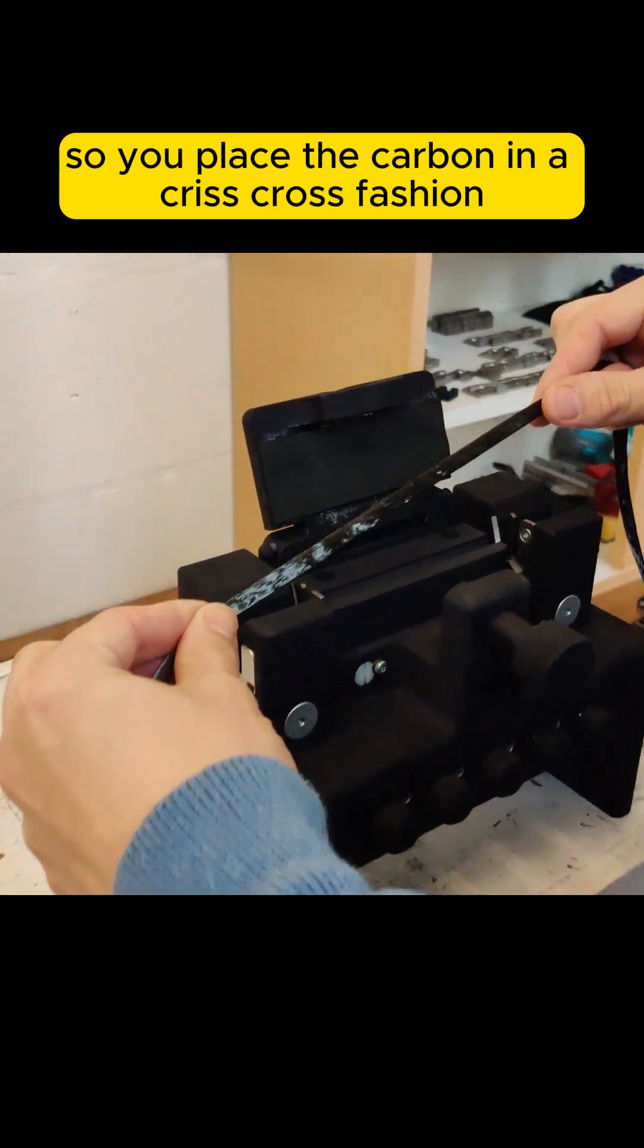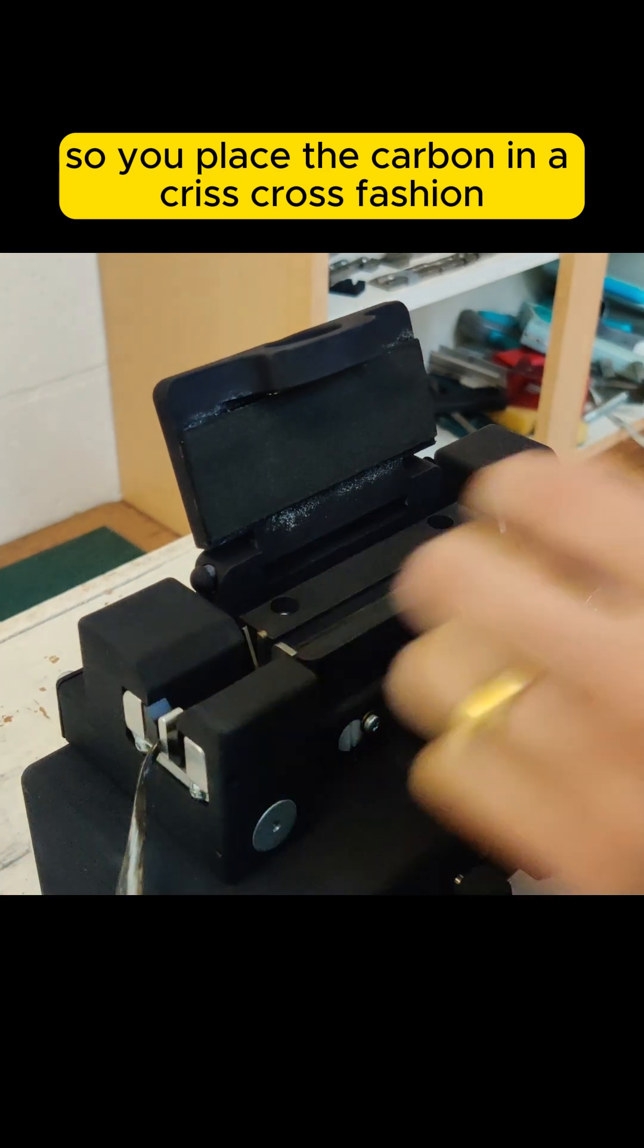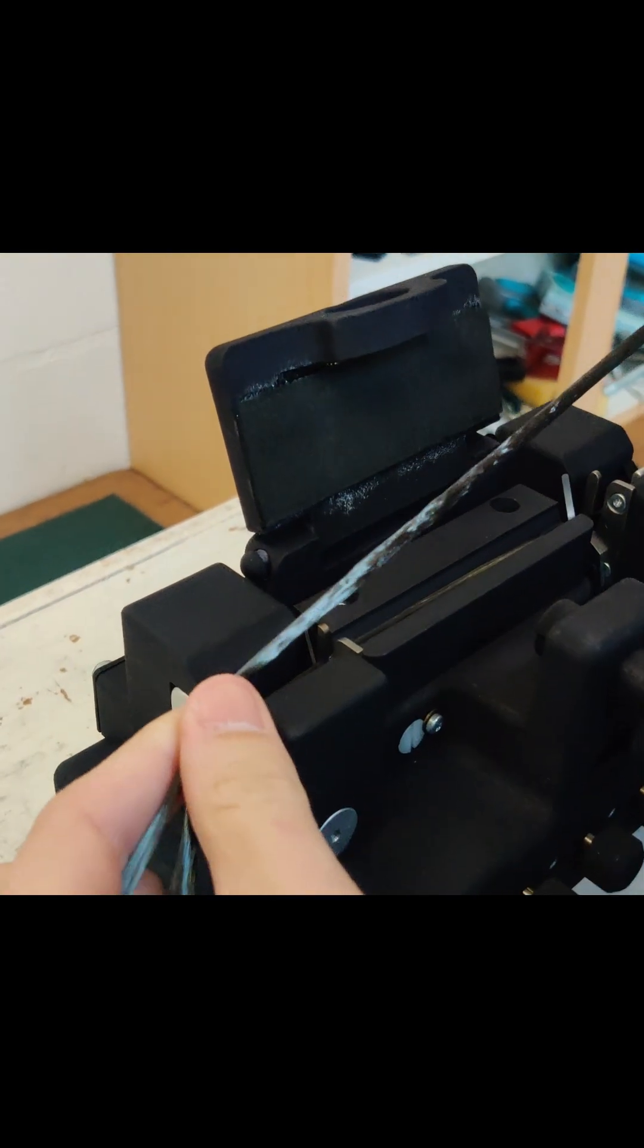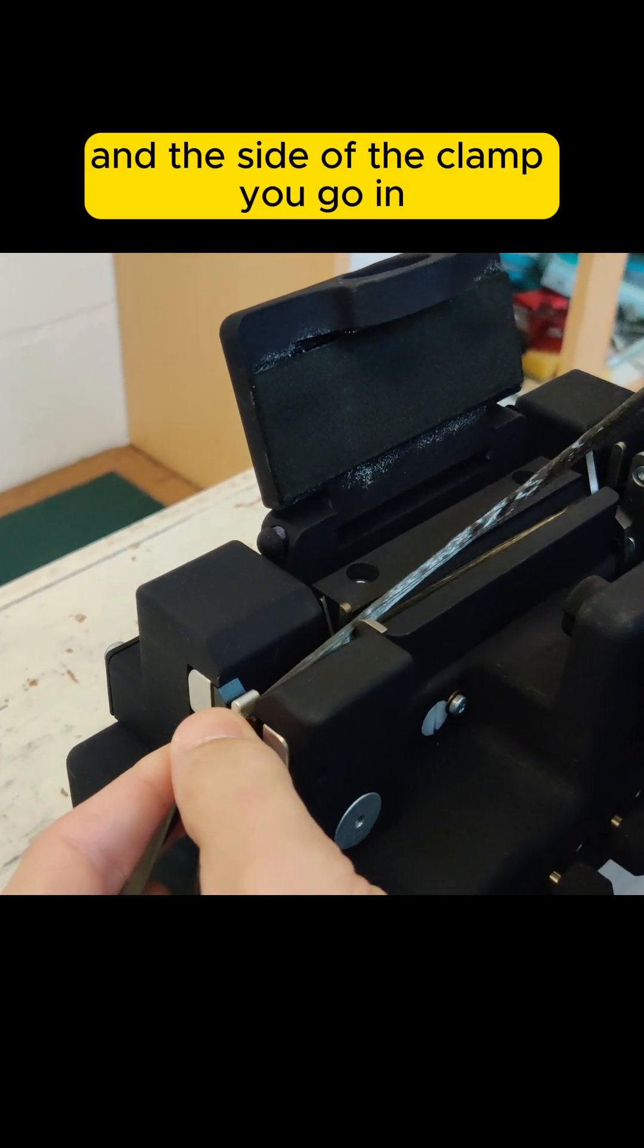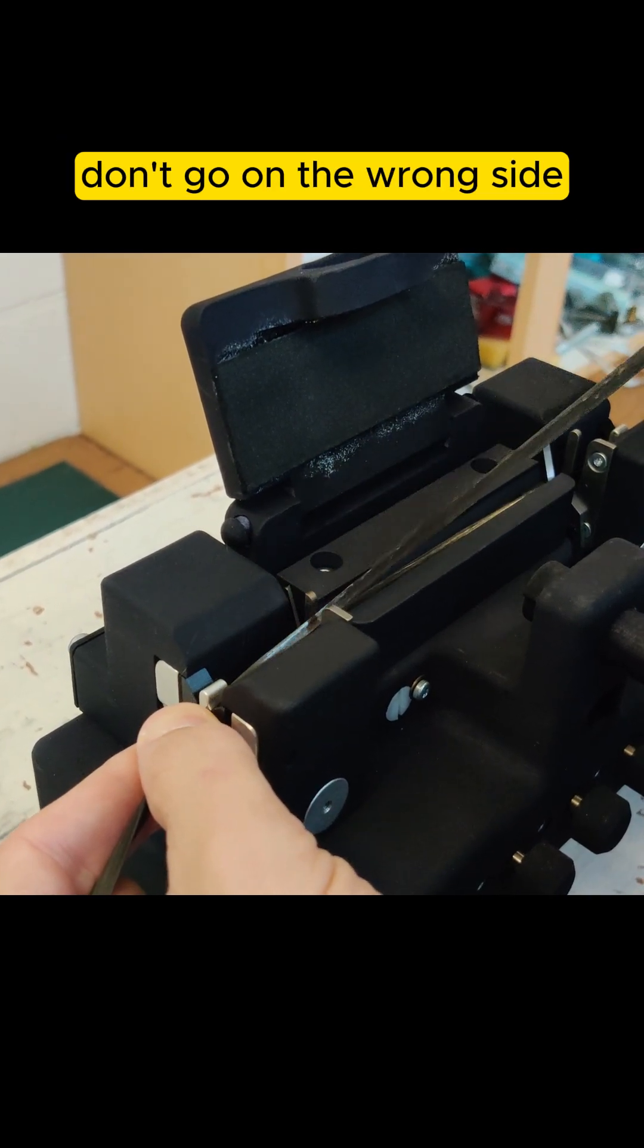You place the carbon in a criss-cross fashion. On the side of the clamp you go in, make sure you go on the correct side of the fixed knife, not the wrong side.